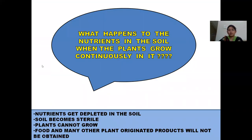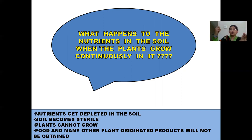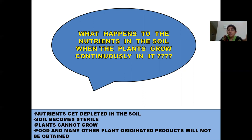Here is a question: what happens to the nutrients in the soil when plants grow continuously in it? When plants grow continuously, the nutrients go on depleting — go on exhausting and decreasing in the soil. Plants take nutrients from the soil, so the nutrients get decreased. Then what happens to the soil? When there are no nutrients in the soil, the soil becomes sterile.